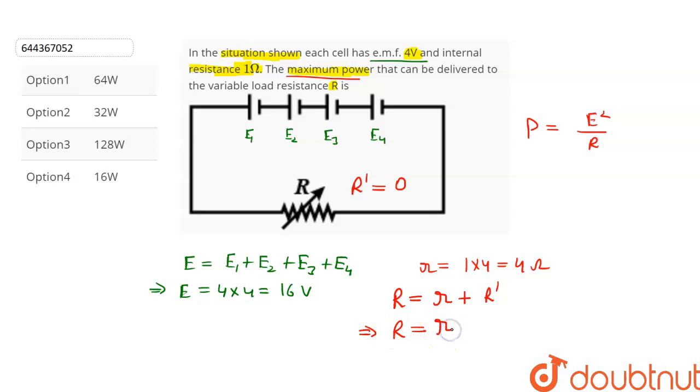Let's substitute the values in this equation. This will give us power equal to E is 16, so 16² divided by r is equal to the internal resistance which is 4 ohms. And after solving we get power equal to 64 watts, so option number one is correct.